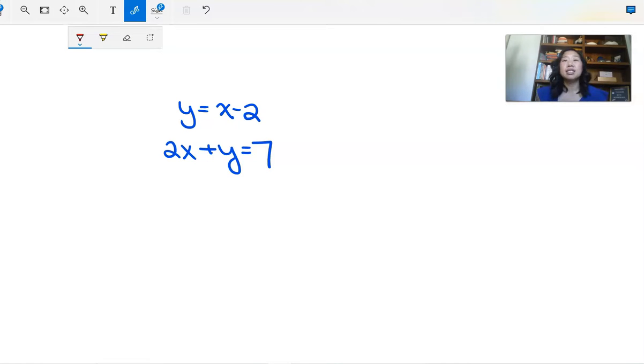So this is a pretty simple system. We have y equals x minus 2 and then 2x plus y equals 7. I like to always tell my students that we have to get one of these equations where one of the variables is already isolated, it's already by itself. And look, we have it here. y is already by itself and y is x minus 2. So this guy is going to be placed in here. So we're going to get rid of this y in the second equation and replace it with x minus 2.